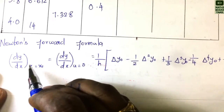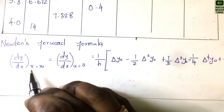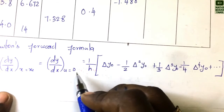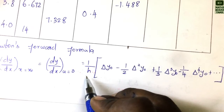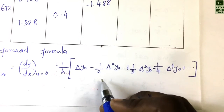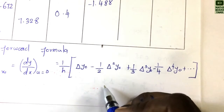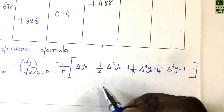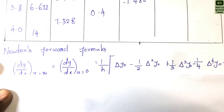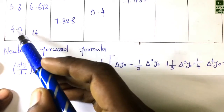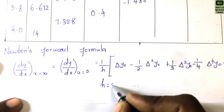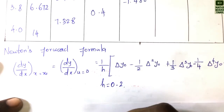Newton's forward difference formula for the first derivative at x = x₀ is: dy/dx = (1/h)[Δy₀ − (1/2)Δ²y₀ + (1/3)Δ³y₀ − (1/4)Δ⁴y₀ + ...]. Here h = 4.0 − 3.8 = 0.2, so h = 0.2.